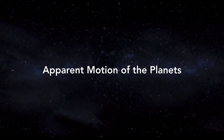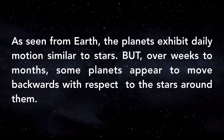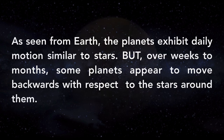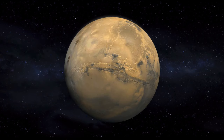Let's talk about the planets. As seen from Earth, the planets exhibit daily motion similar to stars — they rise and set just like stars do. But over weeks to months, there are some planets that appear to move backwards with respect to the stars around them. Let's take Mars as an example.